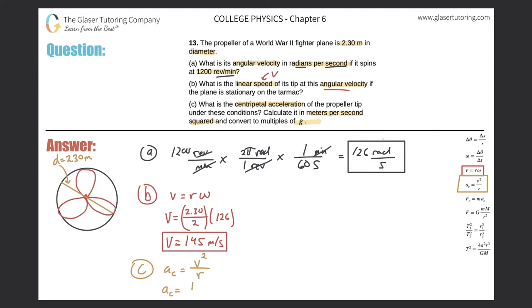All I need to do is now just plug this in. Centripetal acceleration is equal to 145 squared all over the radius, which is 2.3 divided by 2, so it should be 1.15. So 145 squared divided by 1.15 comes out to be a very large number - 1.83 times 10 to the fourth meters per second squared.